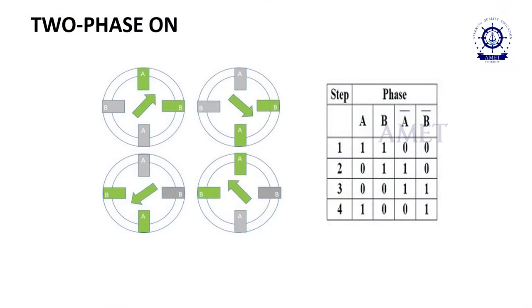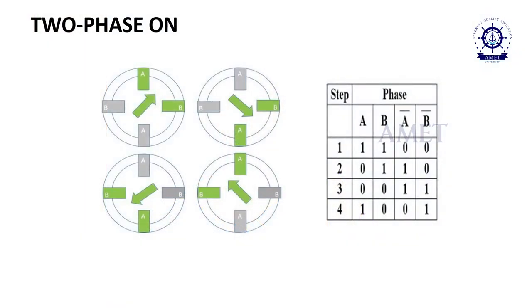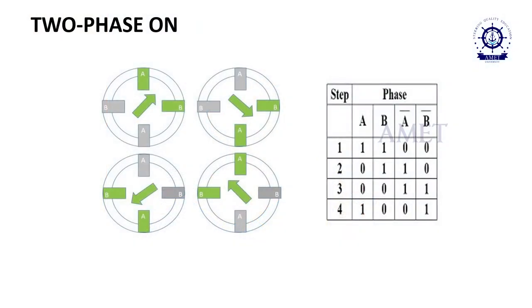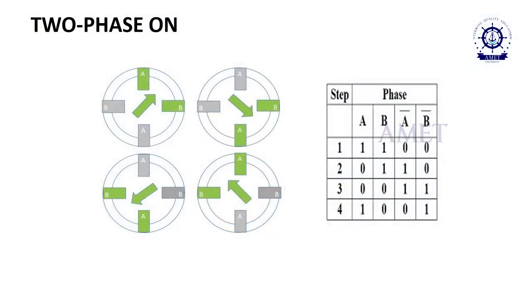The two-phase-on mode is similar to one-phase-on, but at any time two phases are on — that is the difference. Initially A and B are on; next B and A-dash are on; then A-dash and B-dash; then B-dash and A. It is still a full step, but two coils get energized simultaneously at any time. This is another way to control the speed of a stepper motor.